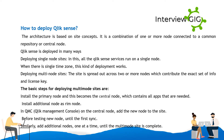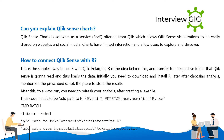The basic steps for deploying multi-node sites are: install the primary node, which becomes the central node containing all needed apps; install additional nodes as rim nodes in the QMC (Qlik Management Console) on the central node; add the new node to the site; test the new node until the first sync; then similarly add additional nodes one at a time until the multi-node site is complete.